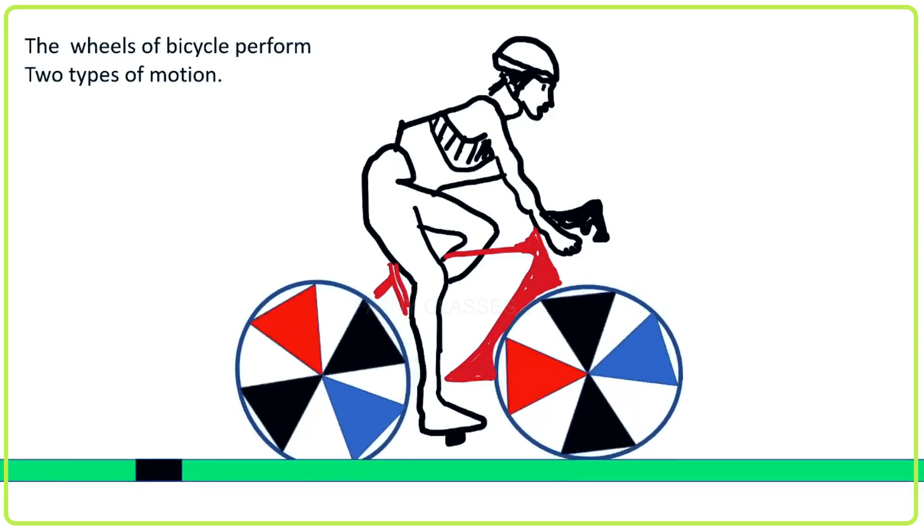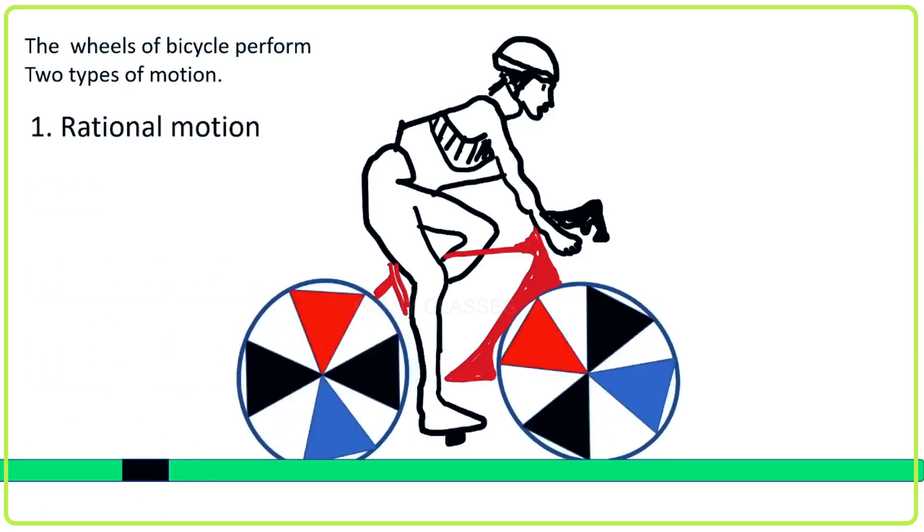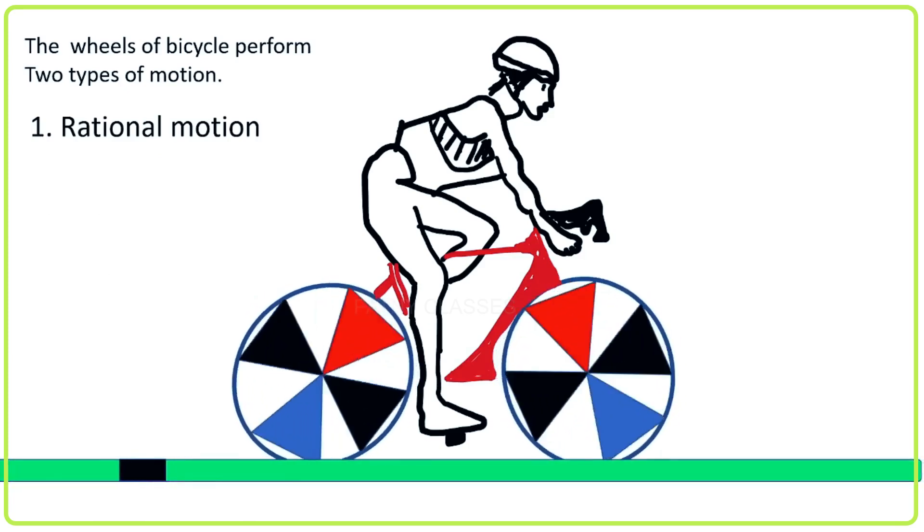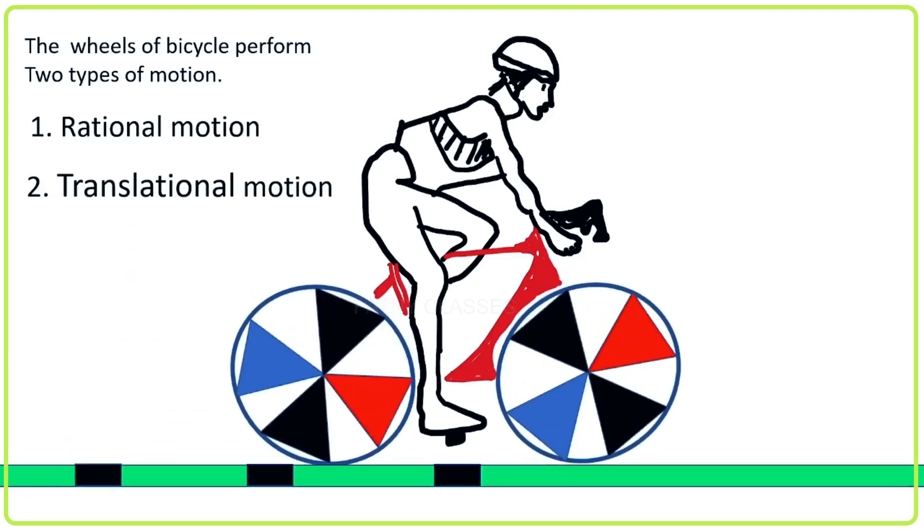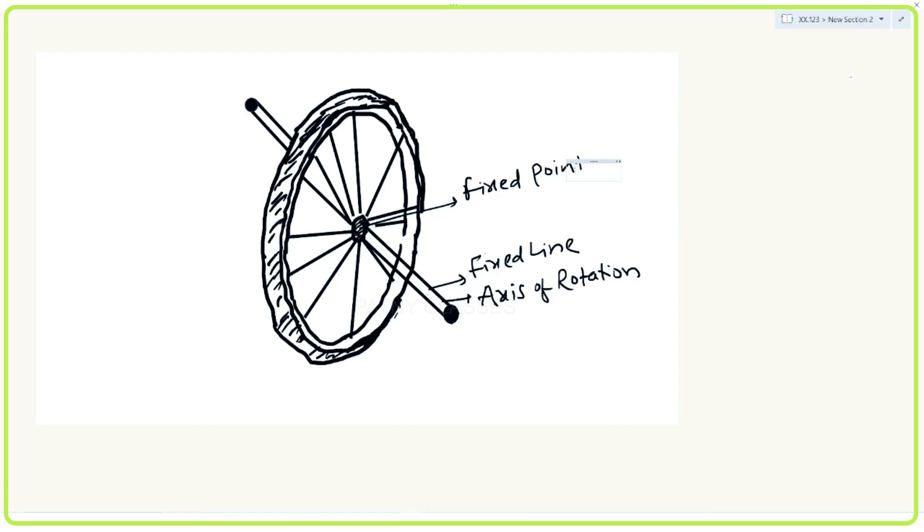The wheels of a bicycle perform two types of motion: rotational motion and translational motion. The wheel is rotating about a fixed line and this fixed line is called the axis of rotation.